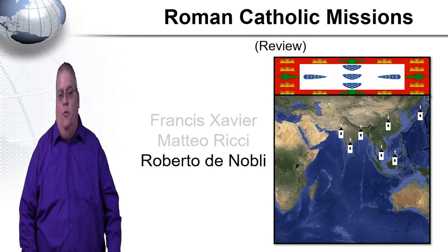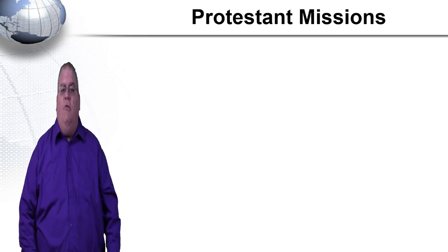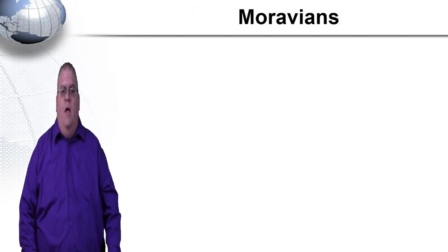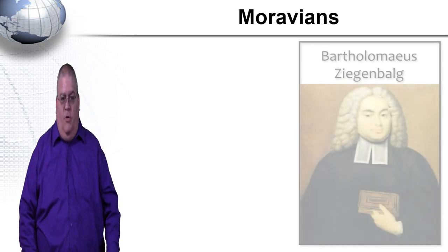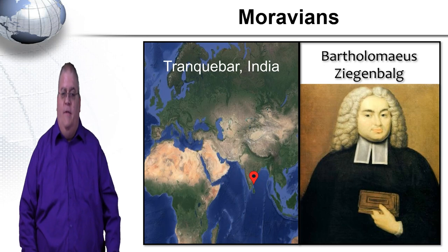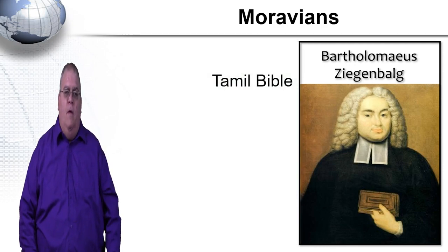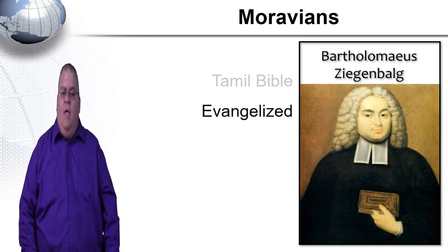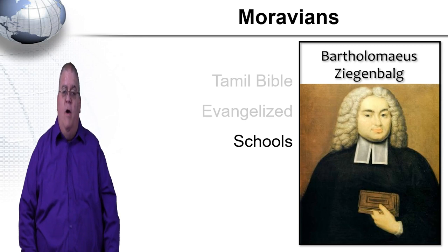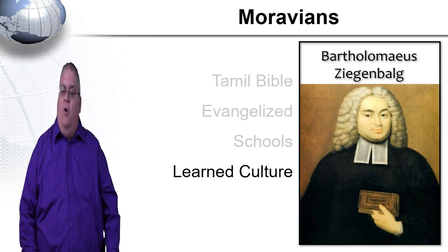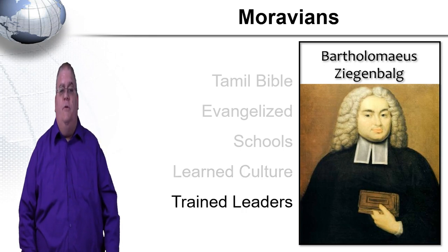These Roman Catholic missionary stories happened just before and during the time of the Protestant Reformation. After the Protestant churches became established, they also began missionary activities. In a section on German Pietism, we briefly looked at the Moravians at Herrnhut. A man named Bartolomeus Ziegenbald went to Tranquebar in southern India in 1706. He learned the Tamil language, translated and published the Bible in Tamil in 1714, evangelized and gathered believers into churches, and founded schools to teach people to read so they could read the Bible. He studied Indian culture to make a credible presentation of the gospel, and also provided medical assistance and trained local leaders to carry on the missionary work.